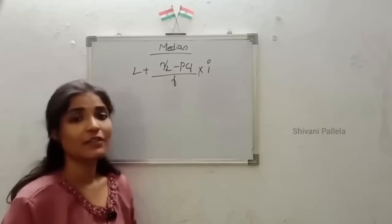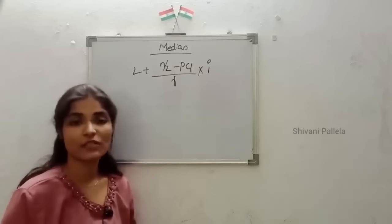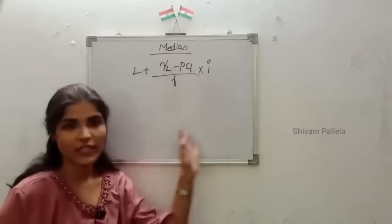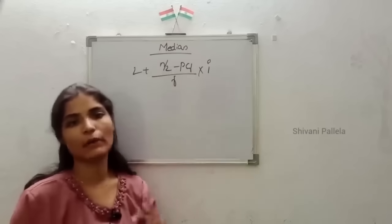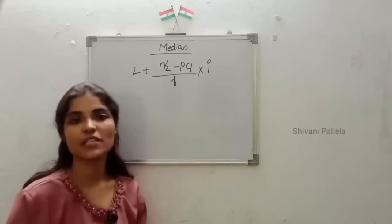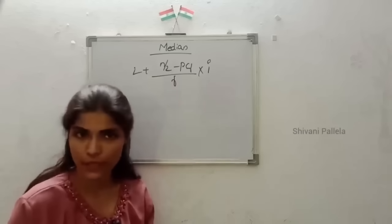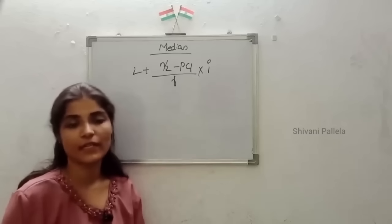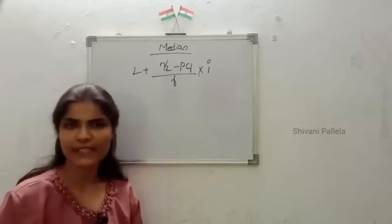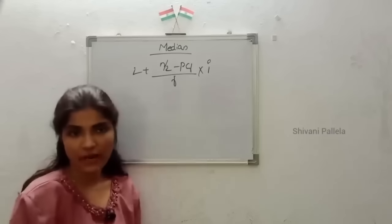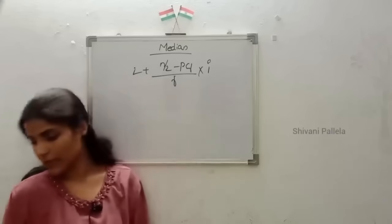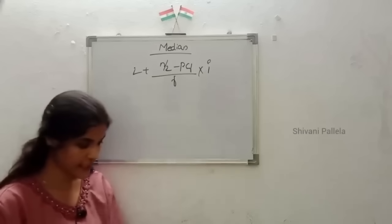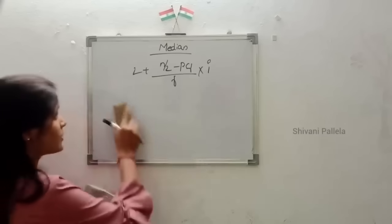Sometimes they will ask: find median plus quartiles. I hope you have watched Bowley's skewness - in that, whatever median we are finding, the same only you are finding in Bowley's also. If you want the quartiles explanation, please watch the Bowley's coefficient of skewness video. Sometimes from Unit 3, they will ask: calculate median and locate quartiles. Just here I will explain about the median. I have one small question - just look at that question.